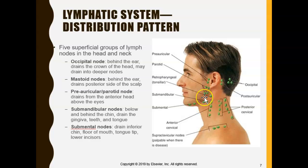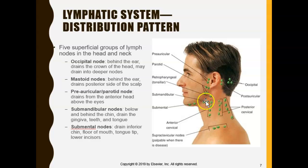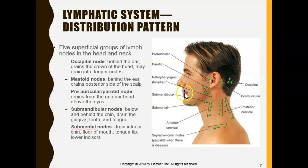The submandibular lymph nodes sit right under the mandible. They drain the gingiva, the majority of the teeth, and the tongue. All the lymphatic vessels and blood vessels in that area have their checkpoint here — they filter out everything and then move on.